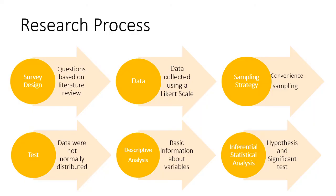The overall research process is presented in this slide. The process started with survey question design based on a literature review. Most of the questions were closed-ended using a Likert scale. Once questions were prepared, a pilot study was conducted, adjustments were made to the questionnaire, and it was sent to participants. After that, data were collected and sampling was done. A normality test was conducted, and for basic variable information, descriptive analysis was done. Finally, inferential statistical analysis was done, in which hypothesis and significance tests were conducted.